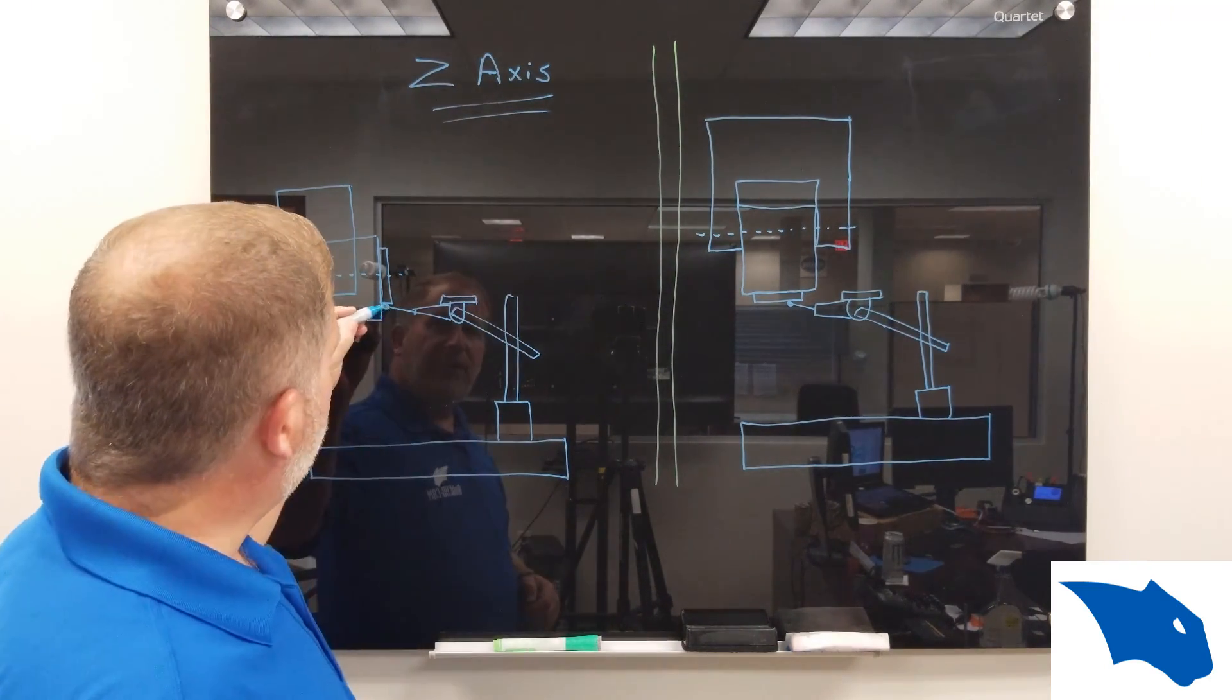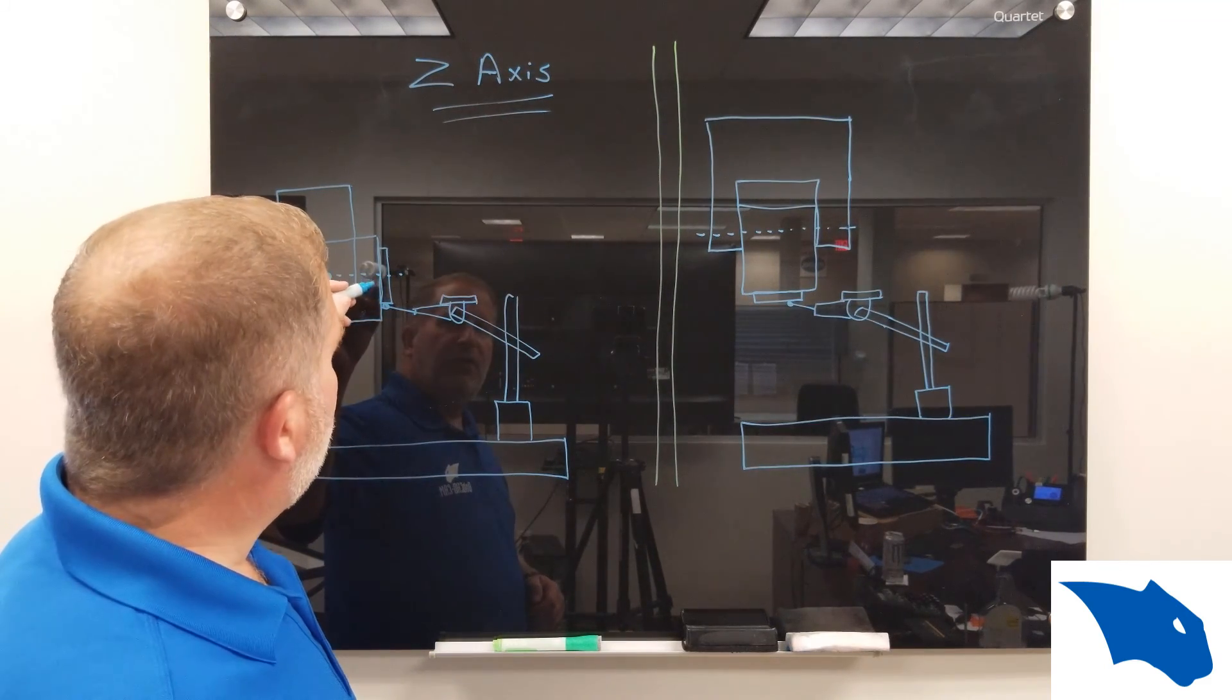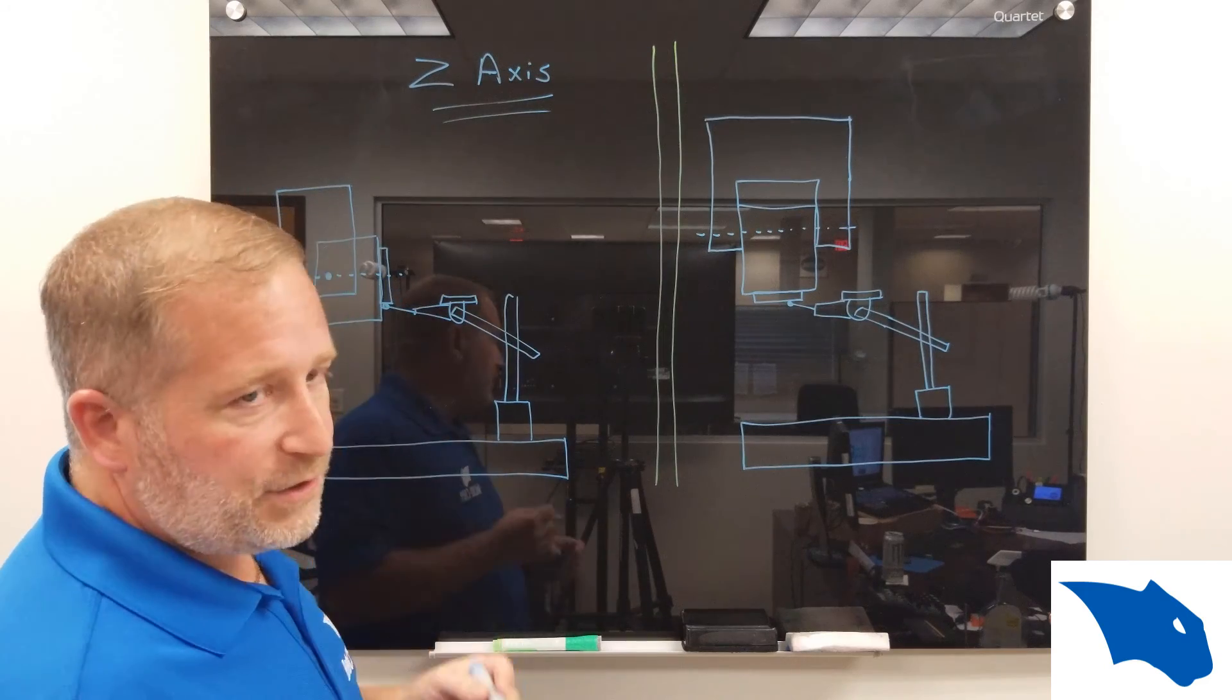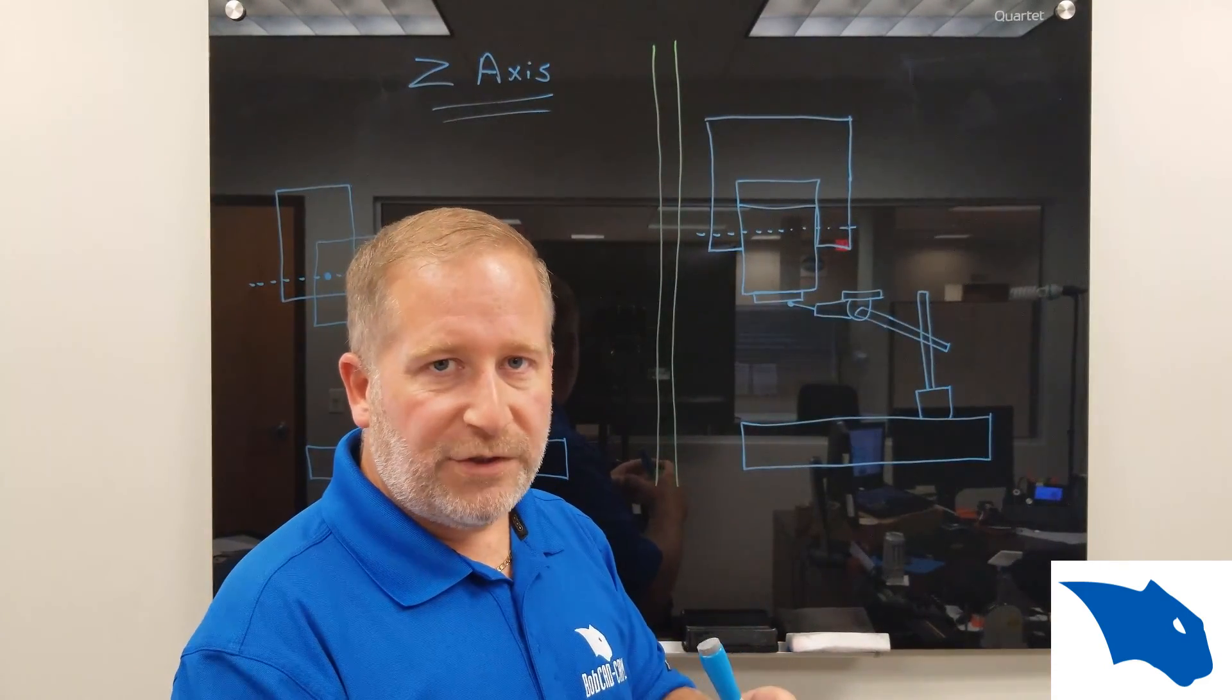Now when you touch off on the diameter of the spindle, you're then going to have to add the radius of that spindle. So whatever that diameter is, you're going to want to measure that precisely.